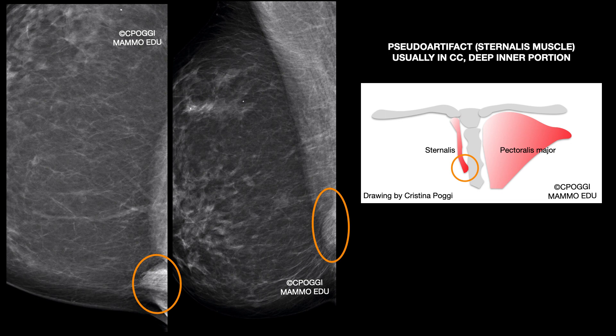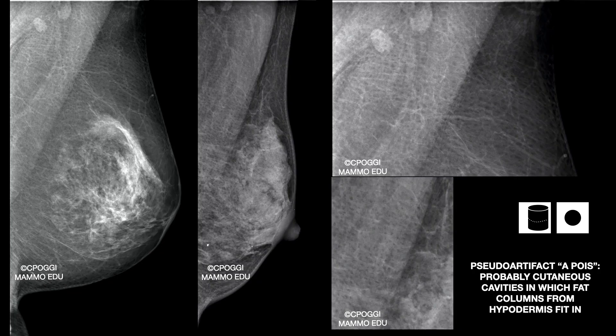It is an accessory muscle called the sternalis, in addition to pectoralis major. A very interesting pseudo-artifact, better seen on magnified images: these parts are probably cutaneous cavities in which fat columns from the hypodermis fit in. They appear rounded because they are actual sections of a cylinder, and radiolucent because they are made of fat.